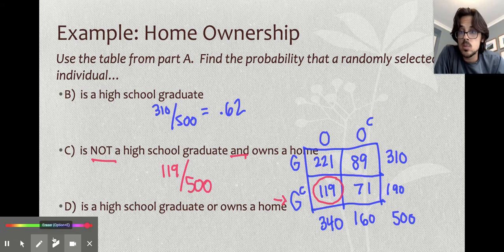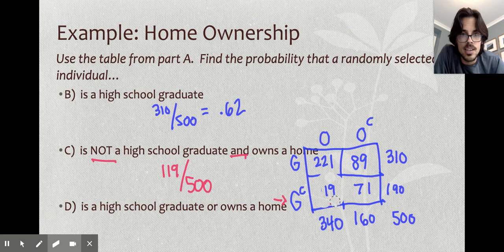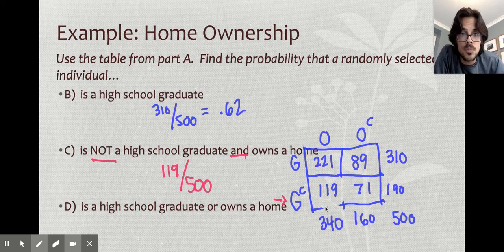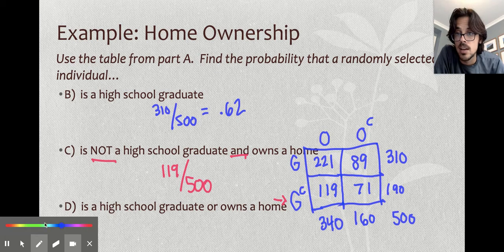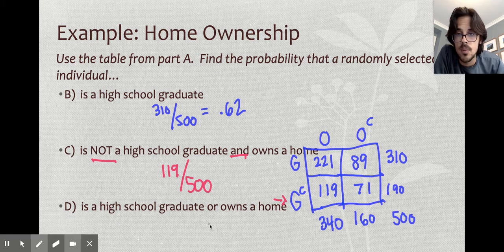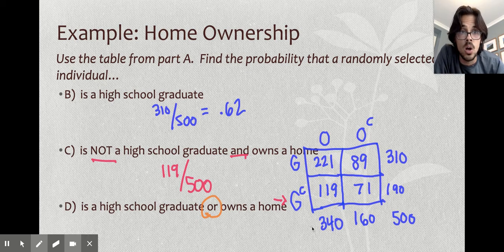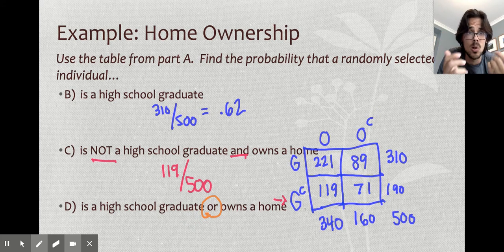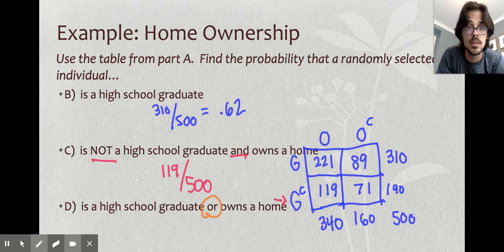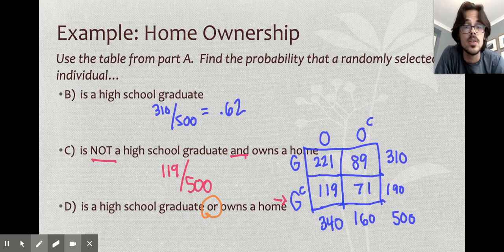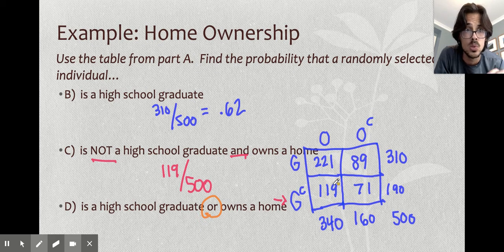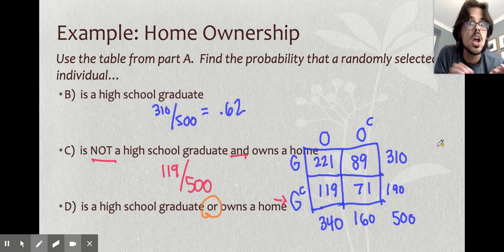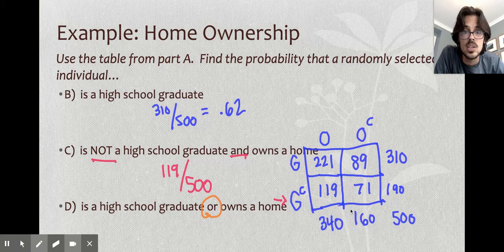This next one is where the whole table thing is actually going to help us because so far it's been kind of just like looking at the picture. But with this last one here, they're finally asking us about an OR probability. And when they bring an OR probability, this is where the two-way table kind of shines for us. So our two events that we care about is, is a high school graduate or they own a home. Now you could do the high school grads, which was I think 310 plus the homeowners, which is 340. If you do that, that's already over 500, and you'd have to subtract out the ones you double counted, subtract out to 221 and you would get your answer.